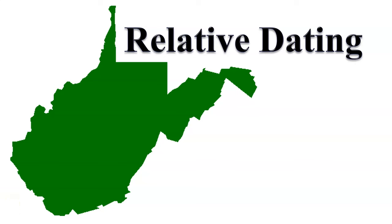We're going to talk today about relative dating. Relative means 'as compared to.' For example, I'm old compared to my students, but I'm not old compared to my father — so I'm younger than my father but older than my students. Tomorrow we'll get into absolute dating, where we put real numbers on something. Today we're just looking at putting things in order relative to older or younger.